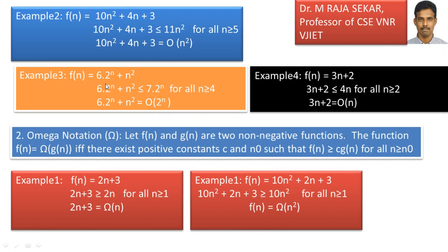Example 3: f of n equal to 6 into 2 power n plus n square. According to the growth function, 2 power n dominates n square. So instead of 6 into 2 power n, we write 7 into 2 power n. By trial and error, it holds for all n greater than or equal to 4. Therefore f of n is of the form f of n less than or equal to c into g of n for all n greater than or equal to n0, so f of n equals big O of 2 power n.